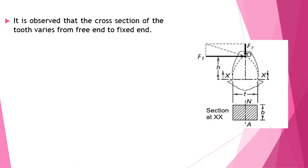It can be seen from the figure that the cross-section of the tooth varies from the free end to the fixed end. The force acting on the tooth is resolved into the tangential component Ft and the radial component Fr. The critical section, or section of maximum bending stress, is section XX due to the tangential force Ft. The tooth is subjected to bending and the maximum bending stress occurs at section XX.